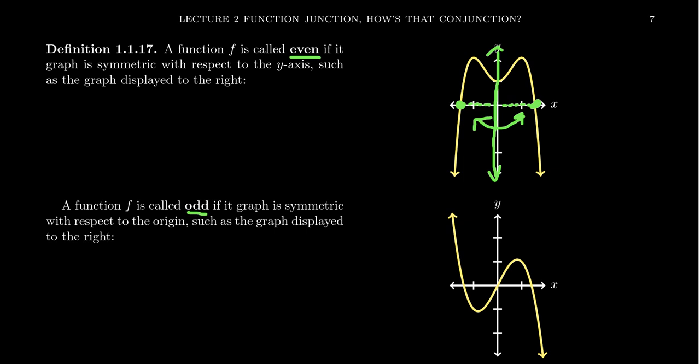An odd function is a different type of symmetry. We say a function is odd if it's symmetric with respect to the origin. This one's a little bit more funky to understand, but symmetry with respect to the origin—you can think of it in one of two ways.